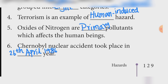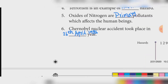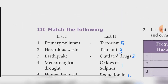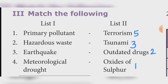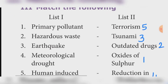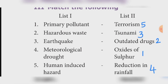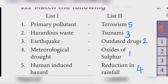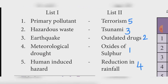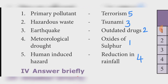Match the following. Primary pollutant — Oxides of nitrogen and sulfur. Hazardous waste — Outdated drugs. Earthquake — Tsunami. Meteorological drought — Reduction in rainfall. Human-induced hazard — Terrorism.